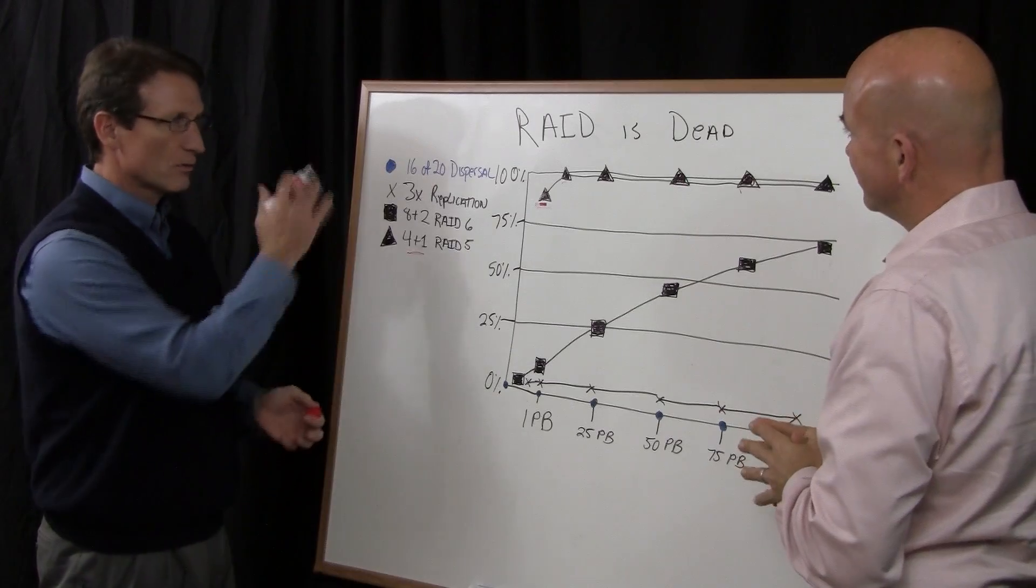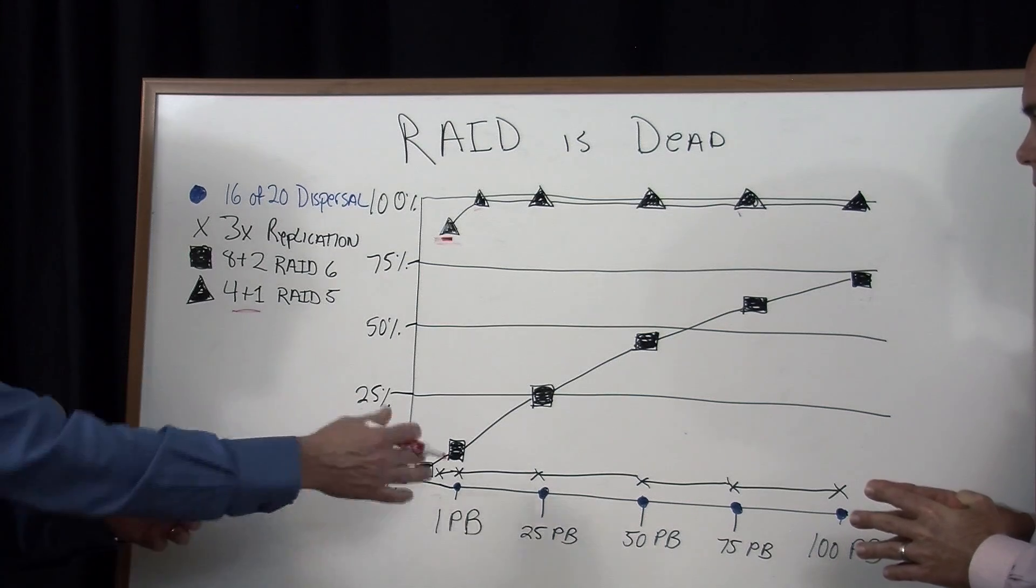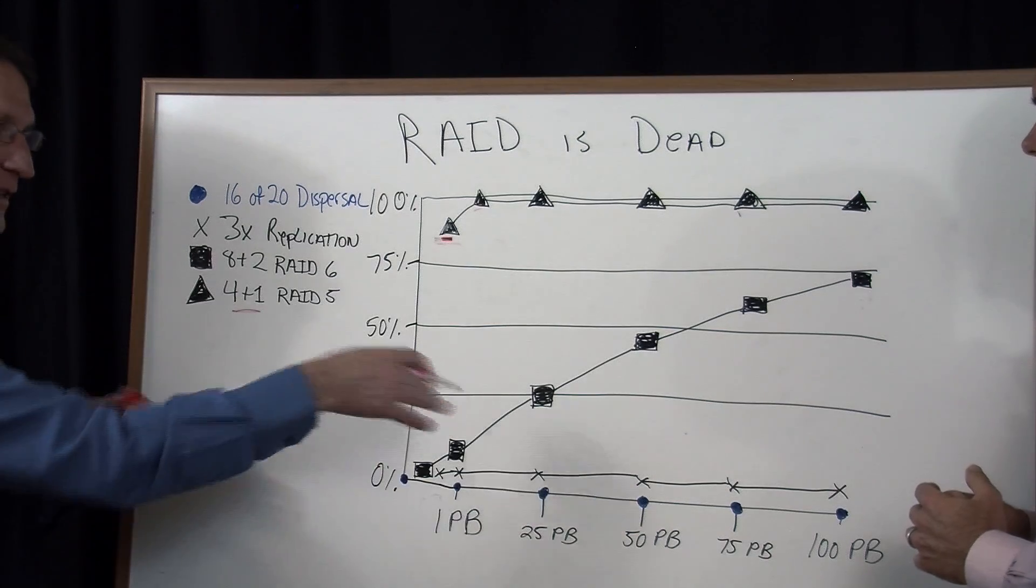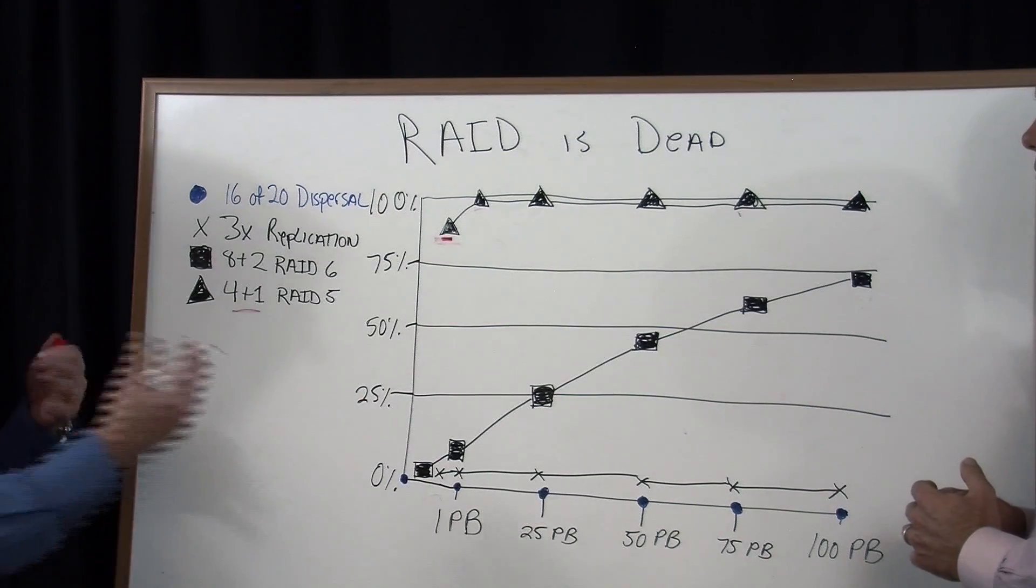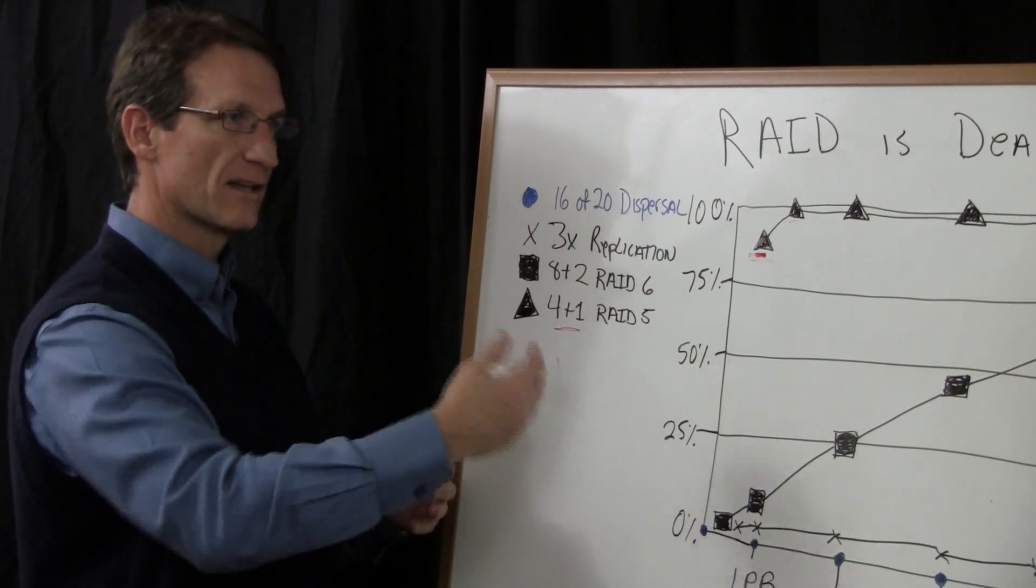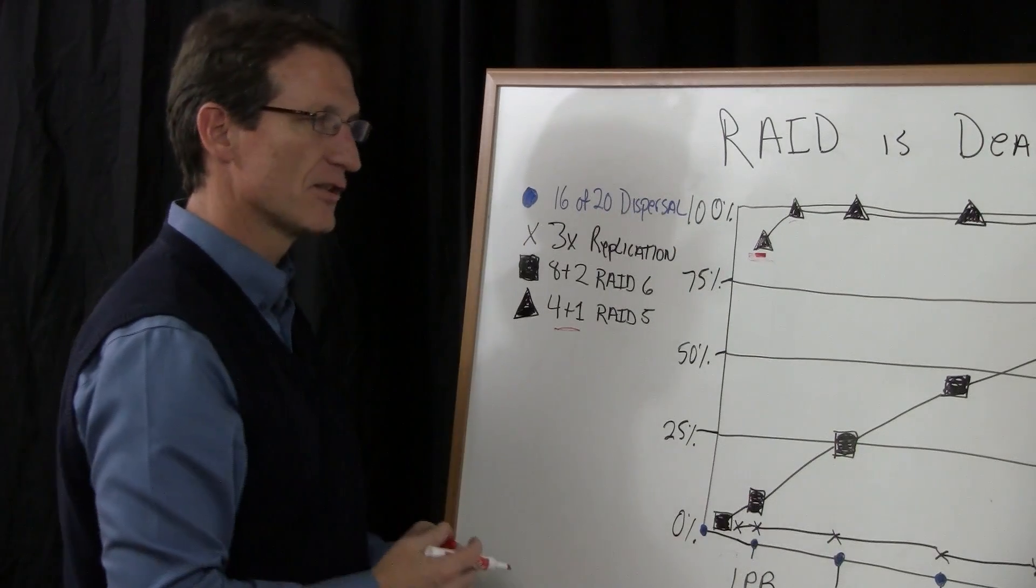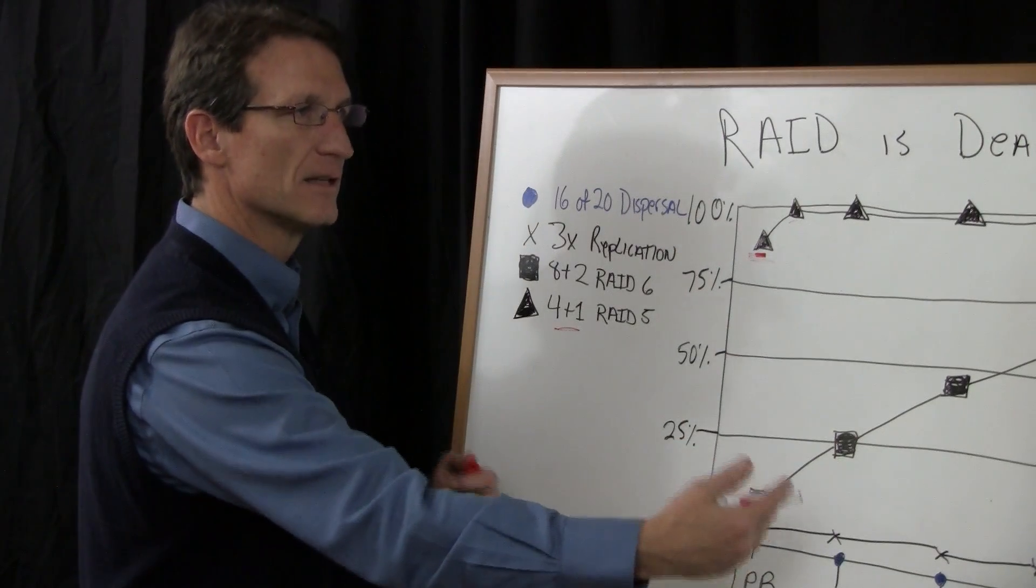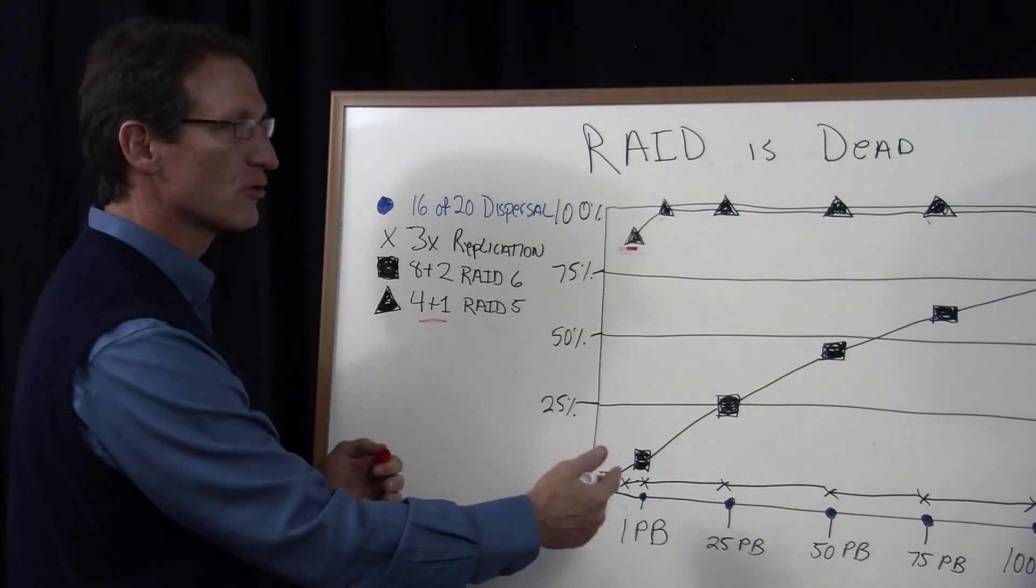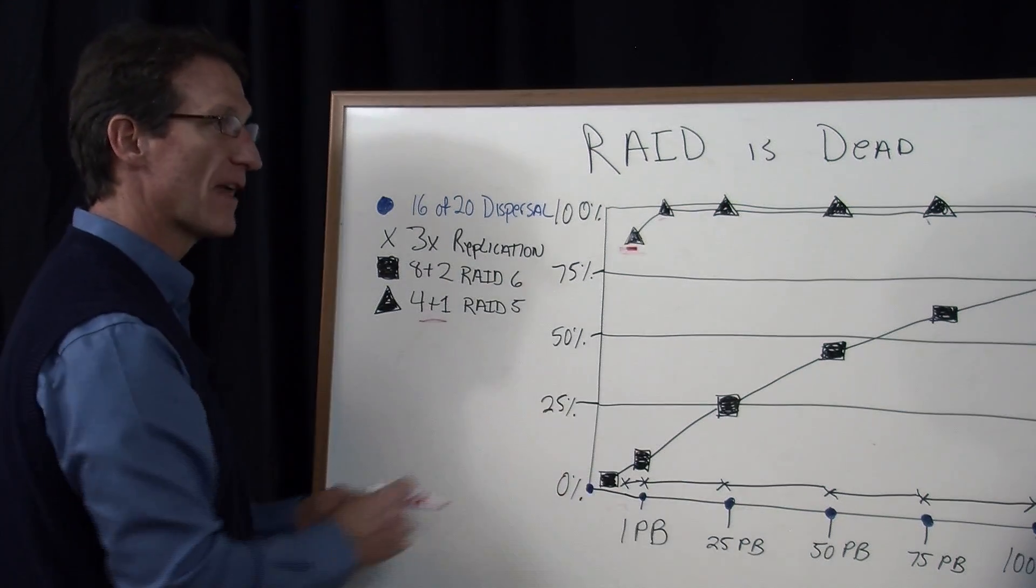So what Cleversafe does is information dispersal. So let me talk about dispersal just at a high level and then we'll talk about the failure rates with dispersal. Dispersal is different from RAID. Instead of striping data across drives and calculating parity, what dispersal does is it takes data in and transforms the data into a set of equations, slices up that data and then disperses the data across a network of storage nodes. The data is generated in such a way that you don't need all the pieces to put it back in its original form. It's matrix multiplication. It's algebra. It's solving variables with a number of equations to put the information back in its original form. So it's just mathematics.